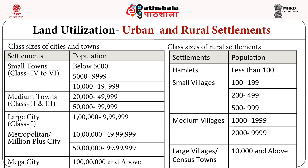Urban settlements follow census classification: small towns below 5,000; 5,000 to 10,000; 10,000 to 20,000; medium towns (Class II and III) from 20,000 to 50,000; then 50,000 to one lakh; large Class I cities from one lakh to ten lakhs; metropolitan cities from ten lakhs to fifty lakhs and fifty lakhs to one hundred lakhs; and mega cities above one hundred lakhs.